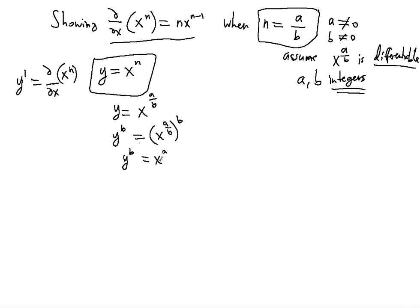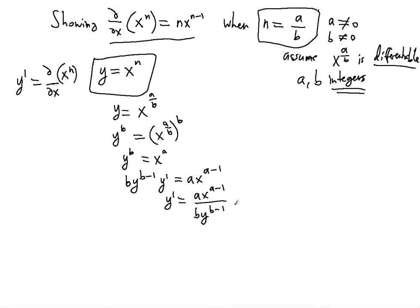Now we're ready to differentiate to solve for y prime. We're going to use the power rule: b times y to the b minus 1 multiplied by y prime is equal to a times x to the power of a minus 1. So to solve for y prime, we're going to have a times x to the power of a minus 1 divided by b times y to the power of b minus 1.